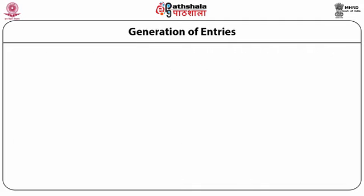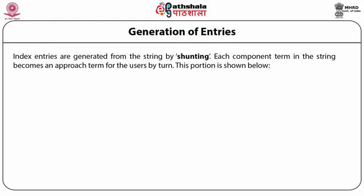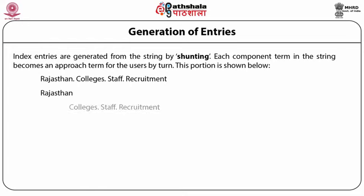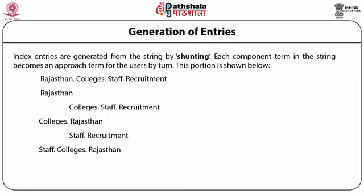Generation of entries. Index entries are generated from the string by shunting. Each component term in the string becomes an approach term for the users in turn. For example, from the string Rajasthan.College.Staff.Recruitment: Rajasthan.College.Staff.Recruitment; Colleges.Rajasthan [next line]; Staff.Recruitment. Staff.College.Rajasthan [next line]; Recruitment. Recruitment.Staff.College.Rajasthan.